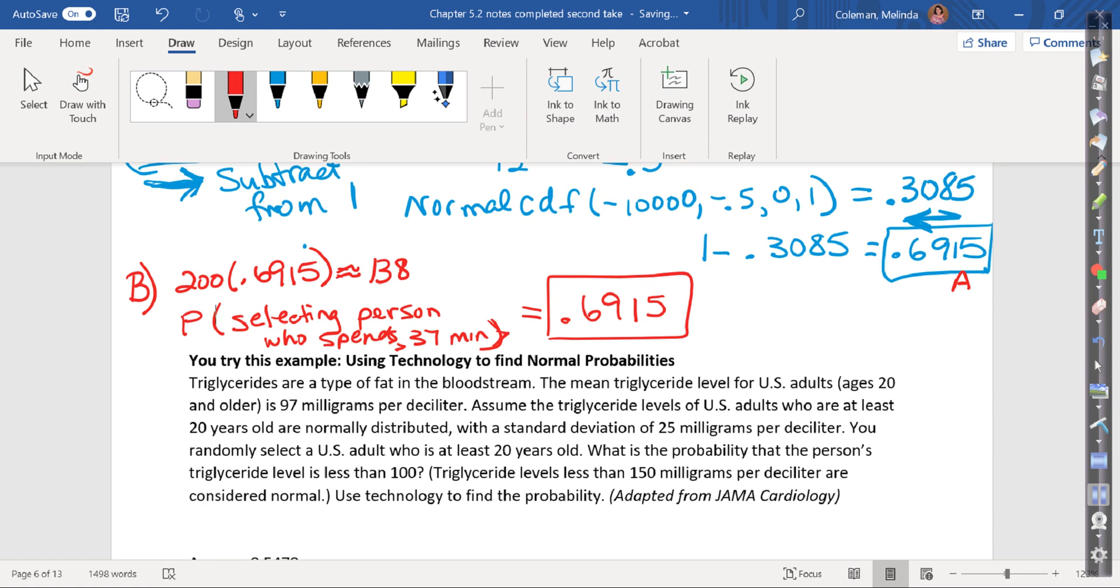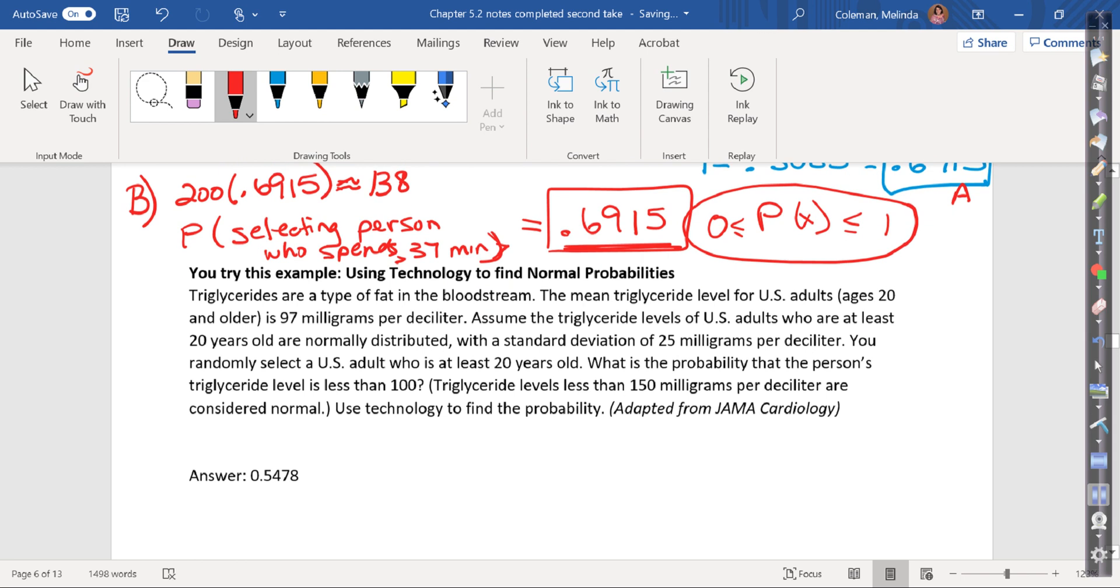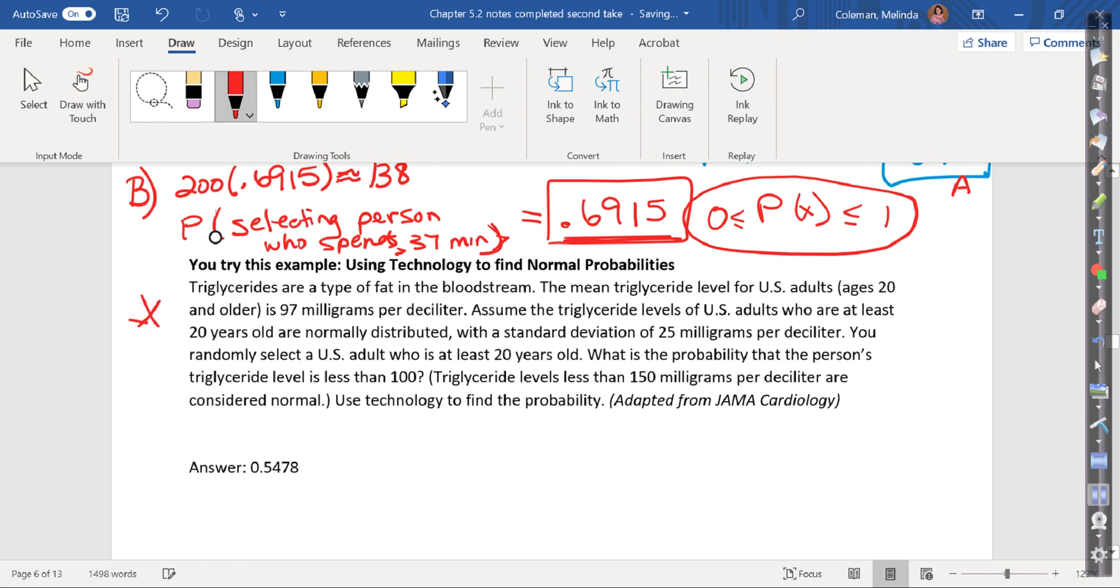Remember, the probability of an event has to be between 0 and 1. So make sure that if it's asking for probability, your answer really is a decimal between 0 and 1. And I left this one for you guys to try. It talks about triglyceride levels. If you want to try triglyceride level less than 100, if you use everything correctly, that should be your correct answer. And that wraps up this section.